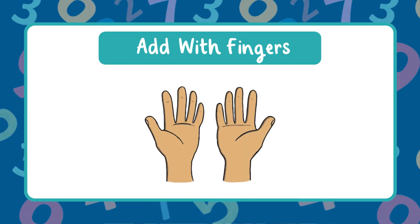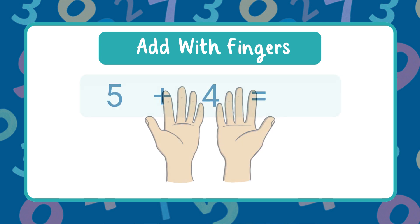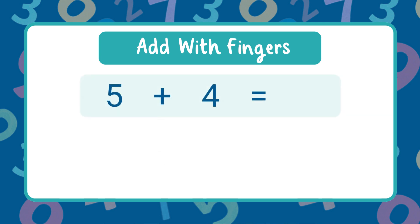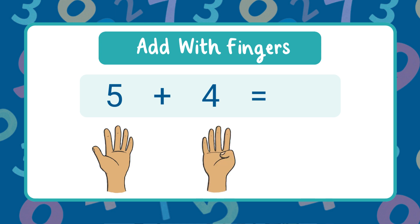Our last strategy is to add using our fingers. To use this strategy, hold up fingers for the first number, then add more fingers for the second number, and count all the fingers to find the sum. Let's try one together — five plus four. Hold up five fingers, now add four more fingers, and let's count them all. The sum is nine, so five plus four equals nine.